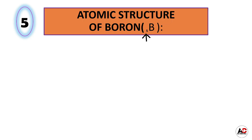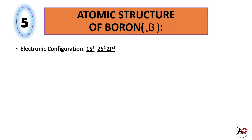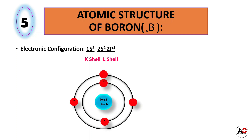Now boron. Atomic structure of boron. The atomic number of boron is 5, meaning it has 5 electrons. So the electronic configuration of boron is 1s2, 2s2, and 2p1. According to this electronic configuration, the atomic structure of boron will be like this. It has 5 protons and 6 neutrons inside the nucleus, and 5 electrons around the nucleus: 2 are in the K shell and 3 are in the L shell.